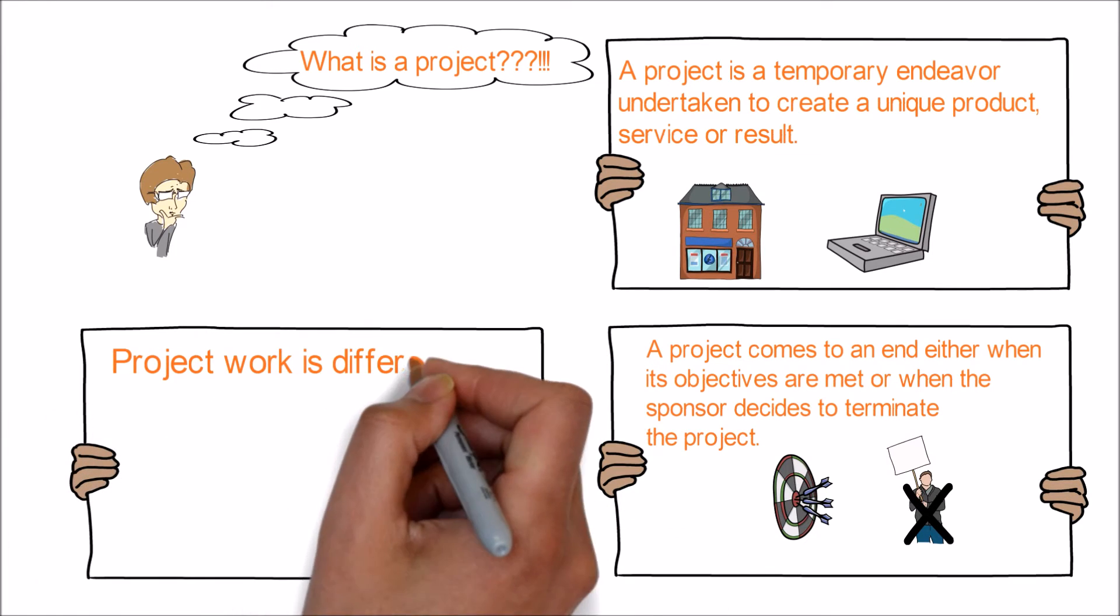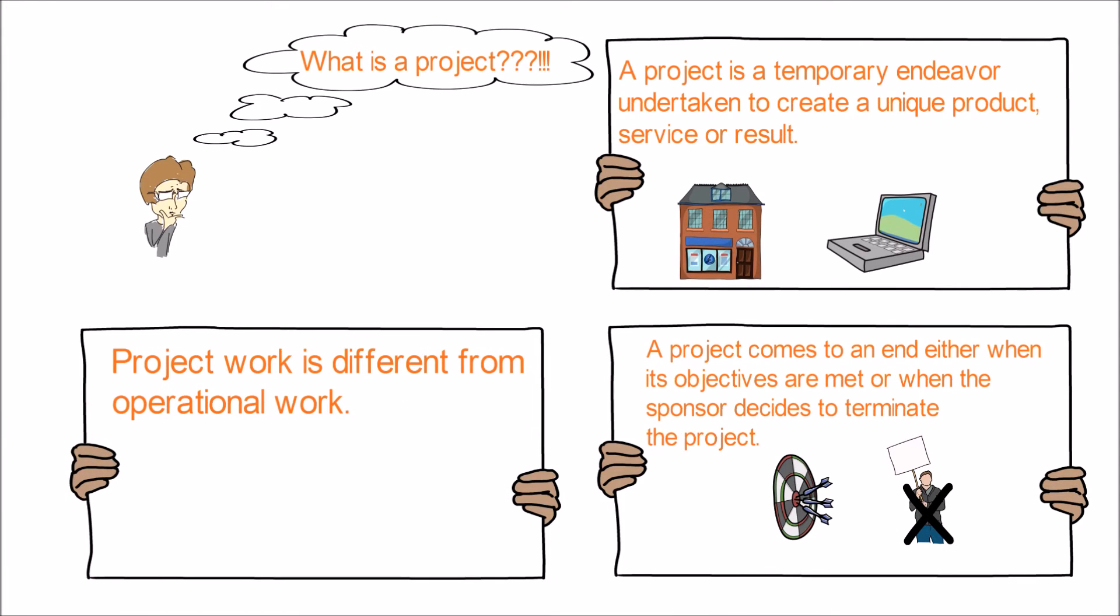On the other hand, the operation is ongoing work and generally a repetitive process because it follows an organization's existing procedures. The ongoing execution of activities that produce the same result or product repetitively is what operations is all about. Examples are product manufacturing and a call center operation.